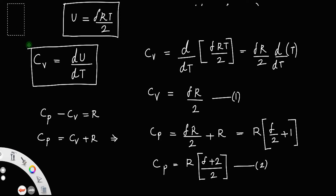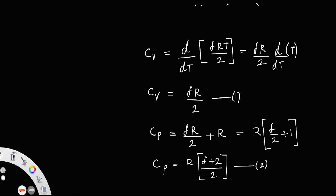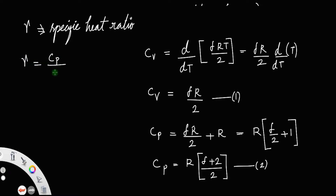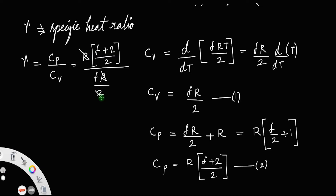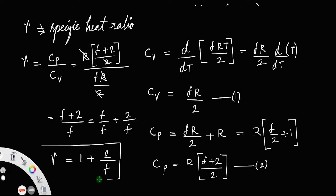Now we have the specific heat ratio gamma, which is Cp divided by Cv. Substituting, gamma = [R(f+2)/2] / [fR/2]. The R and 2 cancel, giving gamma = (f+2)/f = 1 + 2/f. This is the relationship between degrees of freedom and the specific heat ratio: γ = 1 + 2/f.